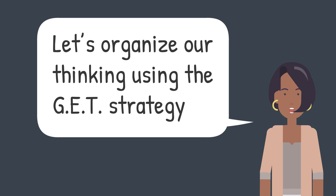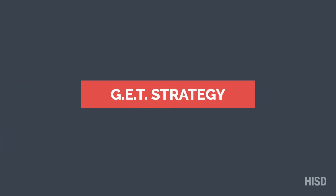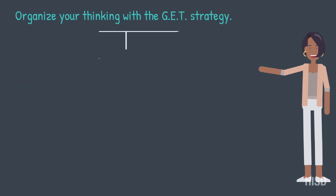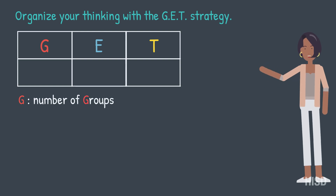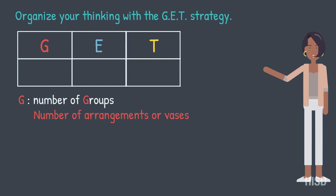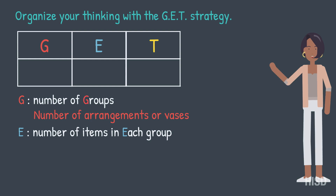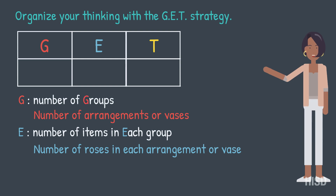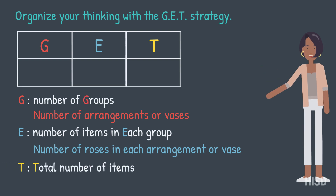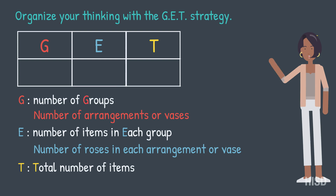Let's organize our thinking using the G-E-T strategy. G is the number of groups — in this case, the number of arrangements or vases. E is the number of items in each group — in this case, the number of roses in each arrangement or vase. T is the total number of items — in this case, the total number of roses.